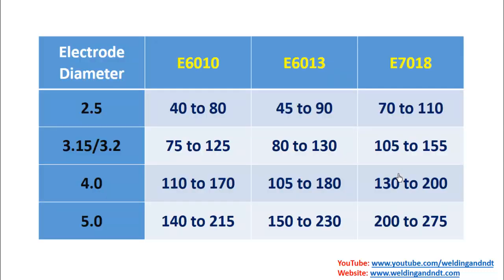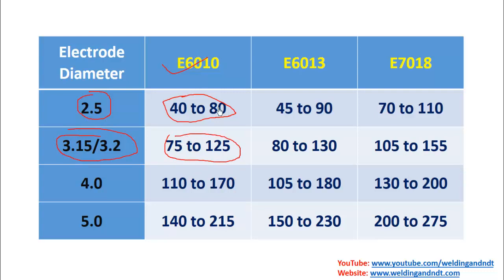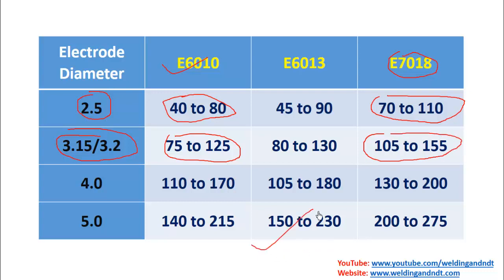Now we will see the current requirements, taken from ASME Section 2 Part C. For different electrode diameters, the current range will differ. For example, E6010 at 2.5 mm diameter requires 40 to 80 amperes, while at 3.15 mm diameter the range is 70 to 125 amperes. For E7018 at 2.5 mm diameter, the current range is 70 to 110 amperes, and at 3.15 mm diameter it is 105 to 155 amperes. Likewise, current ranges are available for all electrode diameters.